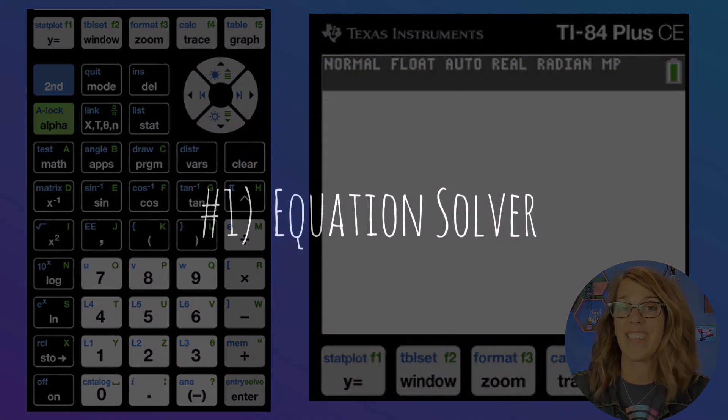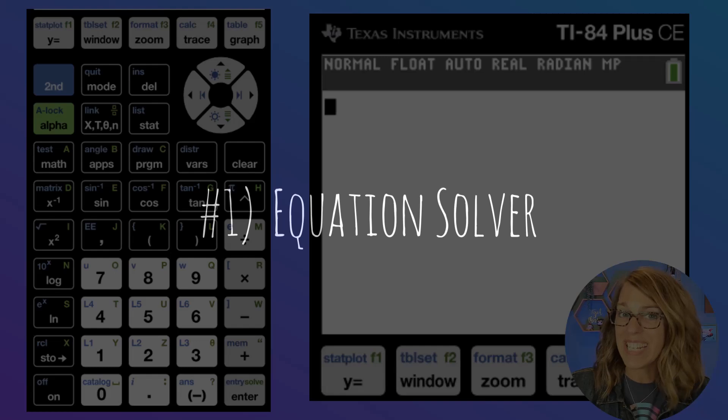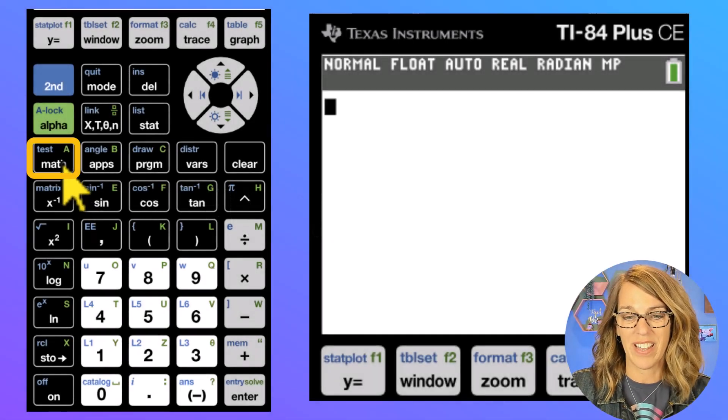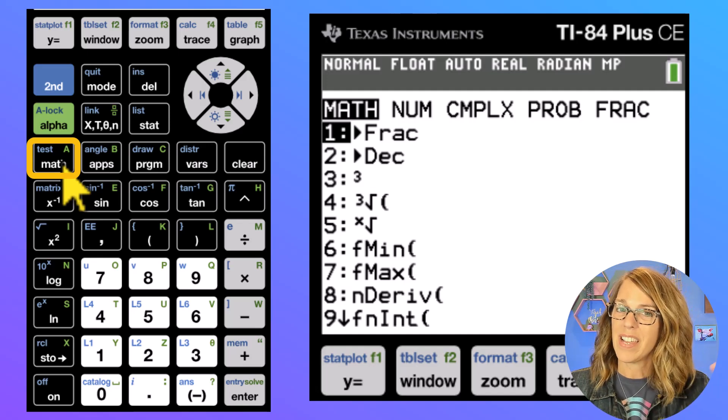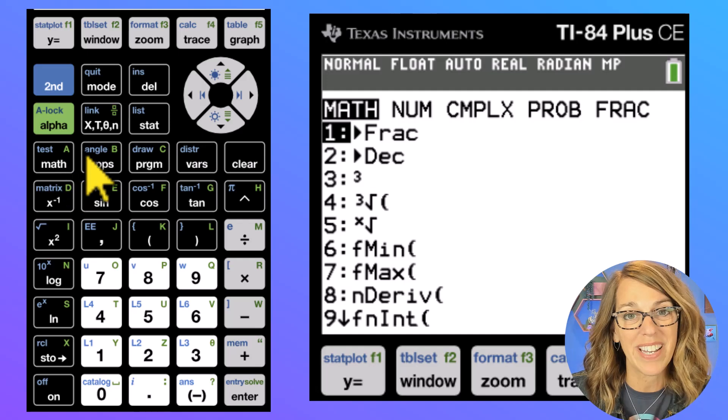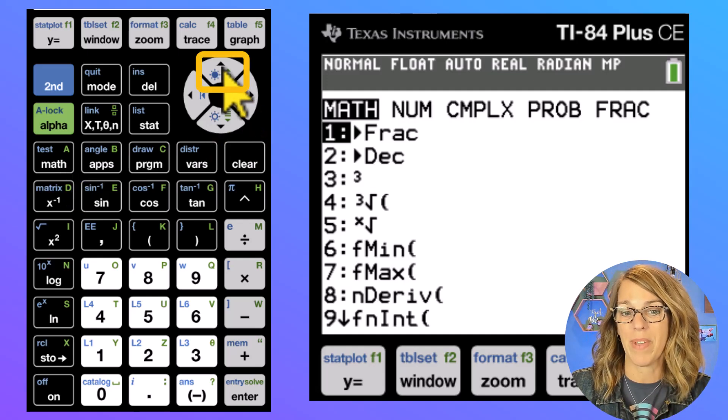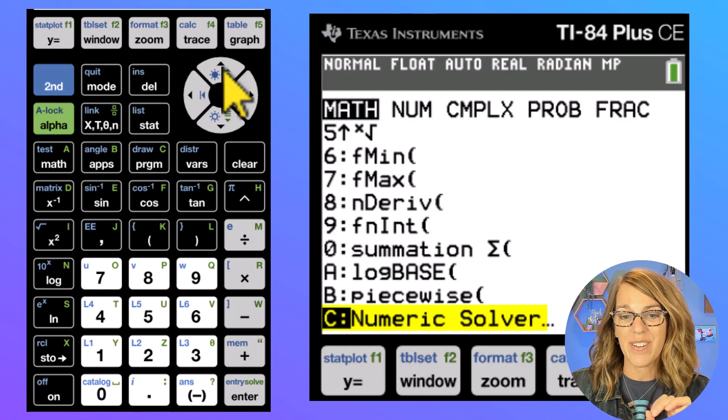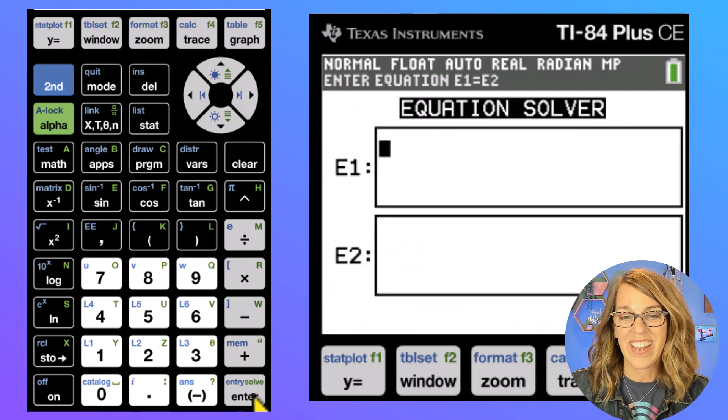The first one is the numeric solver and it lives in your math menu. So I'm going to click the math menu over here in the left-hand column. I know it's towards the bottom of my list so I think the easiest way to get there is by hitting that up arrow. So I'm going to hit the up arrow and there is my numeric solver. Then enter.